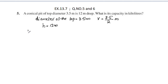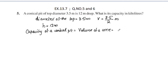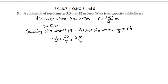The capacity of a conical pit is equal to the volume of a cone. This is equal to one-third π r² h. So, π is 22 by 7, r is 3.5 by 2, and H is equal to 12.